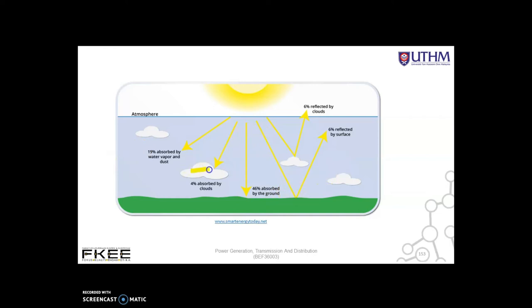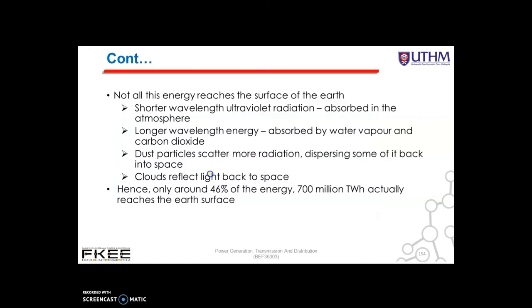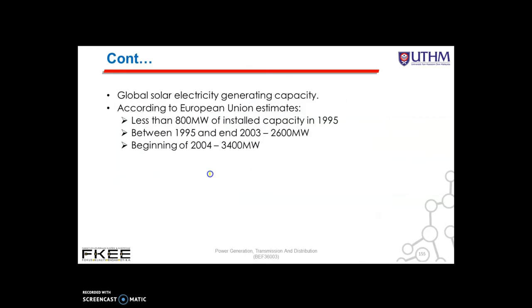Dust particles scatter more radiation, dispersing some of it back to space, and clouds also reflect light back to space. Hence, only around 47% of the energy — approximately 700 million petawatt hours — actually reaches the Earth's surface. Global solar electricity generating capacity is tiny: less than 800 megawatts of installed capacity in 1995, around 2,600 megawatts by end of 2003, and 3,400 megawatts at the beginning of 2004.